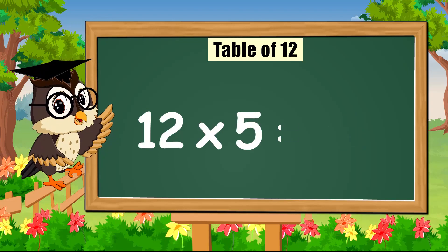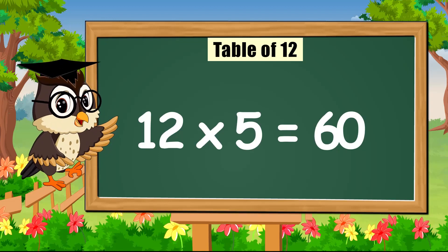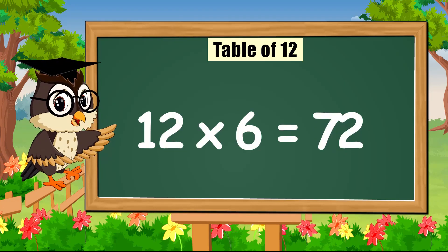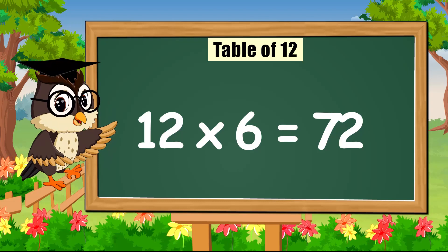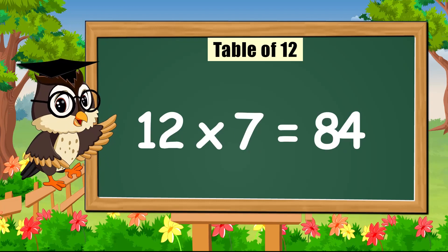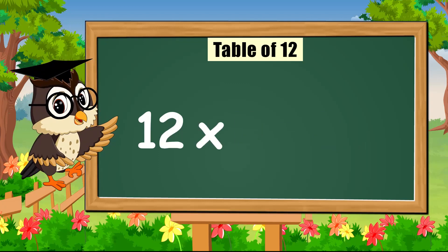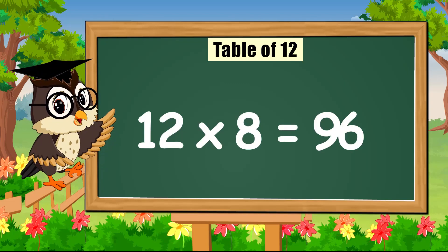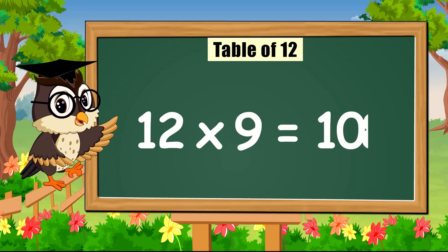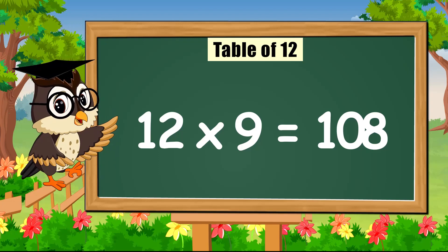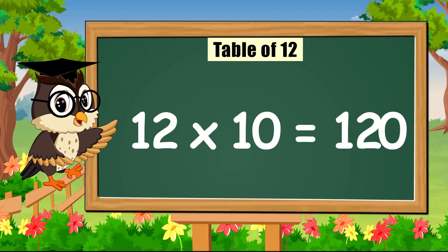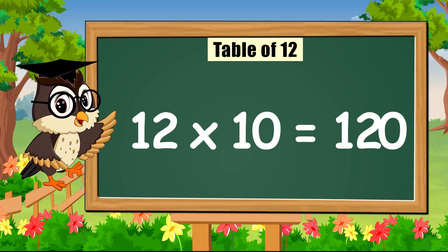Twelve times five is sixty. Twelve times six is seventy-two. Twelve times seven is eighty-four. Twelve times eight is ninety-six. Twelve times nine is a hundred and eight. Twelve times ten is a hundred and twenty.